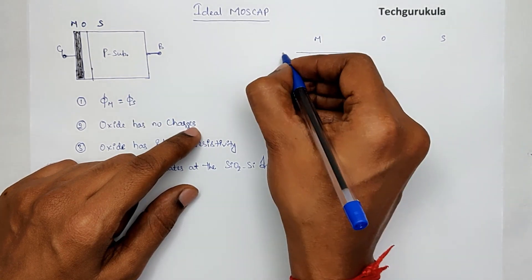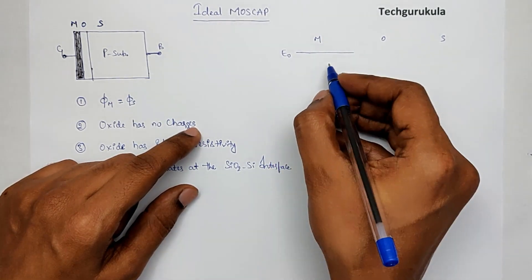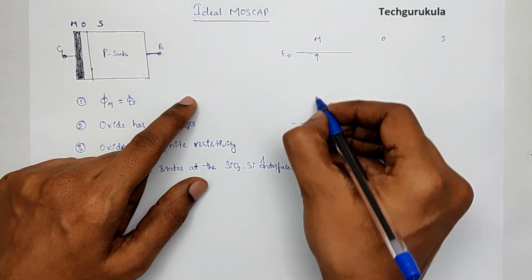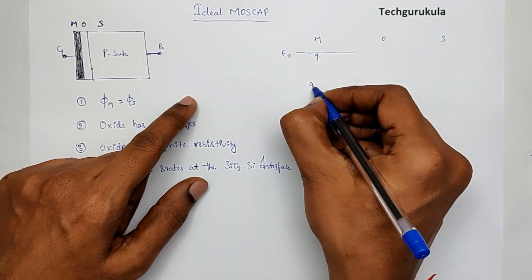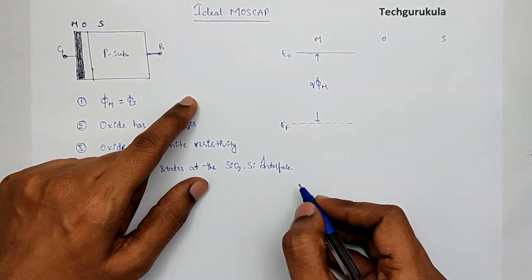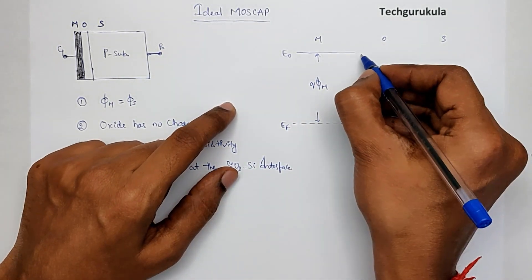At metal, the vacuum energy level is E0 and the difference E0 to EF is Q times phi M. We have seen this in the previous video.